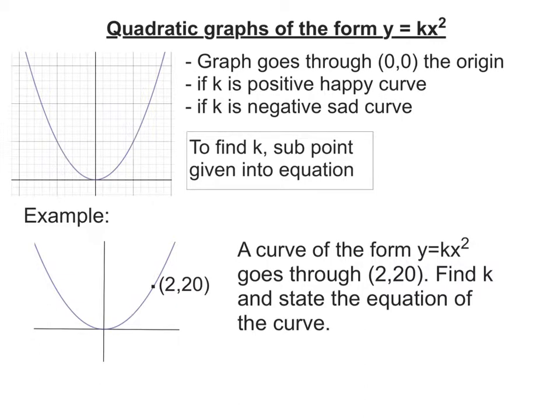In this video, we're going to look at quadratic graphs of the form y equals kx squared. The main thing to note about a graph of this form is that it goes through the origin, (0, 0). That's where its turning point is.